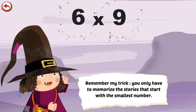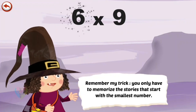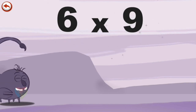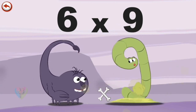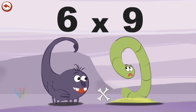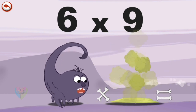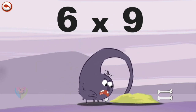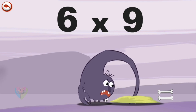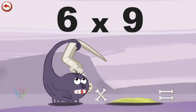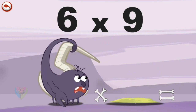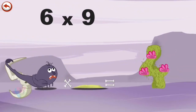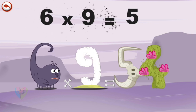Remember my trick: you only have to memorise the stories that start with the smallest number. What's the story of 6 times 9? When Scorpi 6 meets Slimey 9, he wants to sting him with his tail. But Slimey 9 is quicker and hides underground. Scorpi 6 tries to reach him but comes out with a cow's skull in the shape of a 5 hanging off his tail, and gets rid of it behind a cactus in the shape of a 4. 6 times 9 is 54.